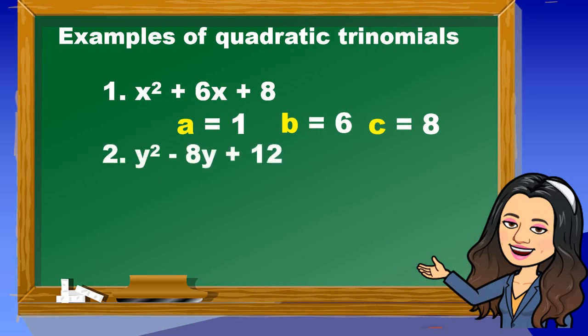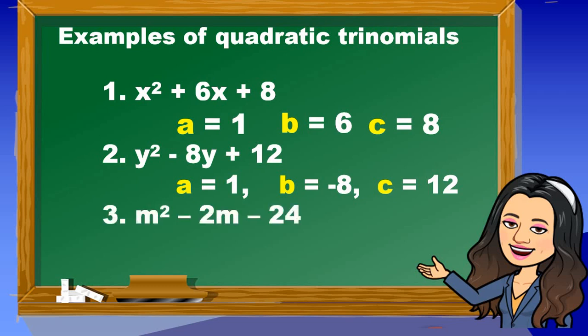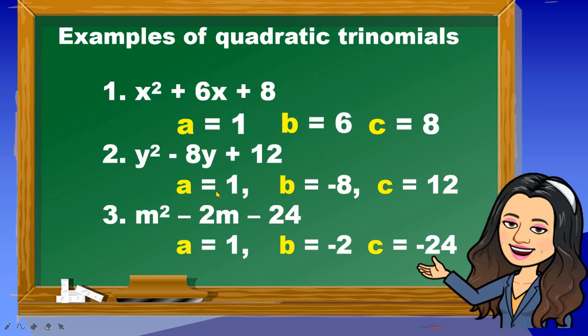Number 2: y squared minus 8y plus 12. What are the values of a, b, c? a is equal to 1, b equals negative 8, c is equal to 12. Number 3: m squared minus 2m minus 24. The values of a, b, c are 1, negative 2, negative 24. If you observe, all the values of a here are all equal to 1.